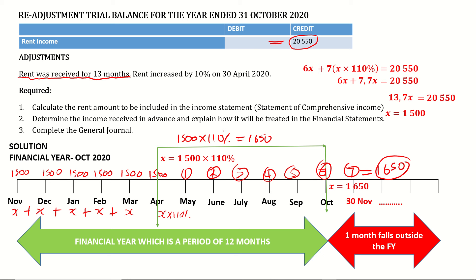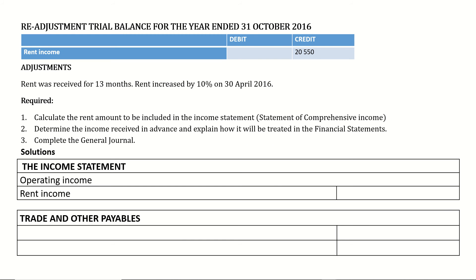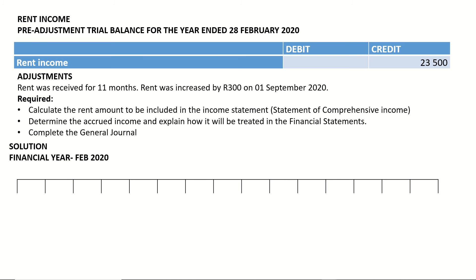Income received in advance is similar to prepaid expenses, except here we are the ones receiving rent. We received rent for the next financial year, meaning we owe the tenant that R1,650 back — it is a liability to us. So in the income statement, take rent income of R20,550 and subtract R1,650, giving earned rental income of R18,900. Under trade and other payables, income received in advance is R1,650.